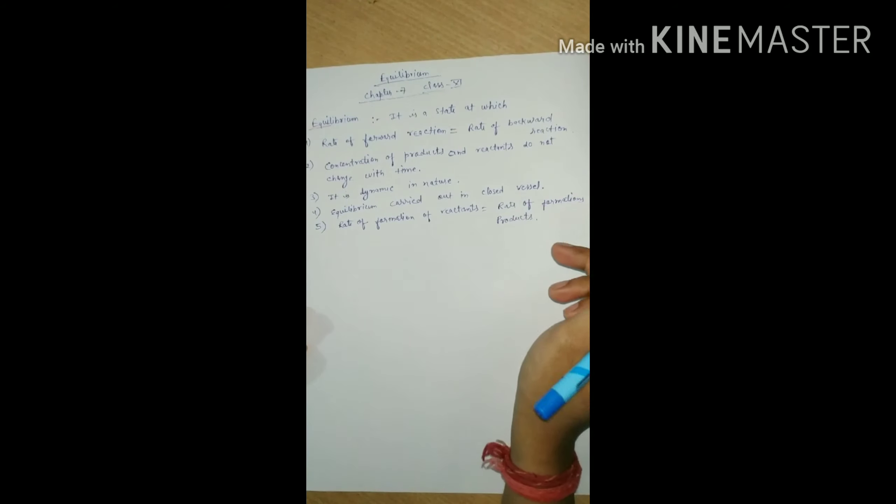You have studied in lower classes that there are three types of phase changes: solid to liquid, liquid to gas. So you can see that there is equilibrium between solid and liquid, and we can take like solid is ice and water is liquid, so there is an equilibrium between ice and water.